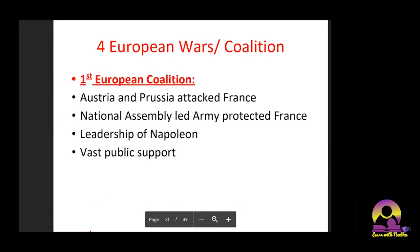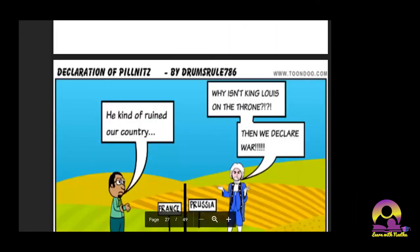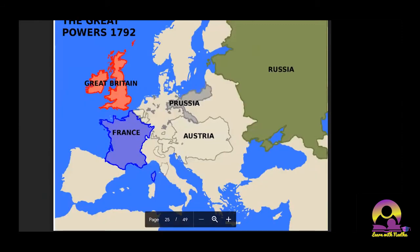We are now talking about the four European coalitions. The first two coalitions were against France, and in the third and fourth, France — under Napoleon's leadership — went and attacked others. In the first coalition, Austria and Prussia attacked France.